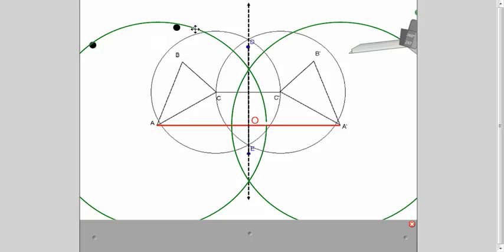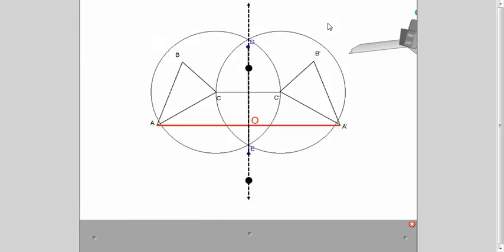It turns out that these points of intersection also lie on that same line of reflection. And it turns out that that's the same case for segment B, B prime as well. So all those perpendicular bisectors are the same as the line of reflection.